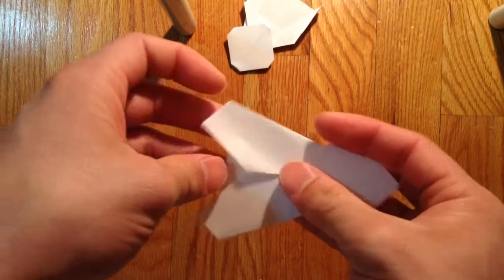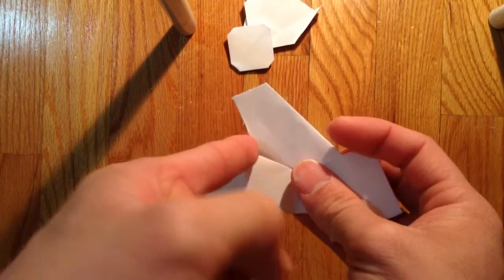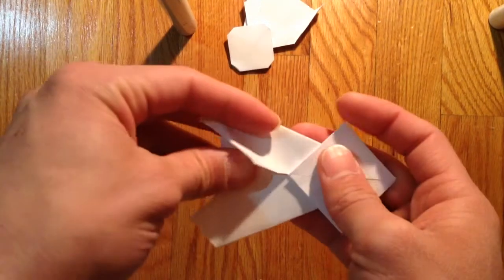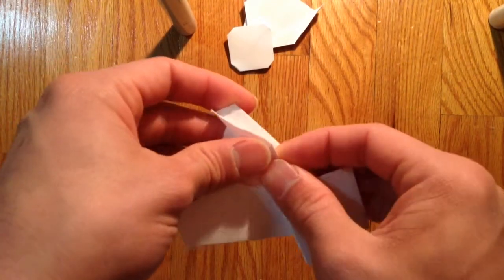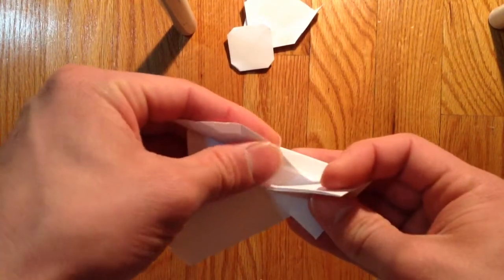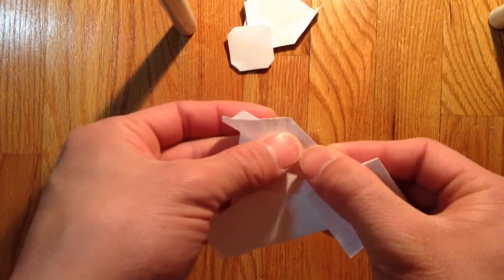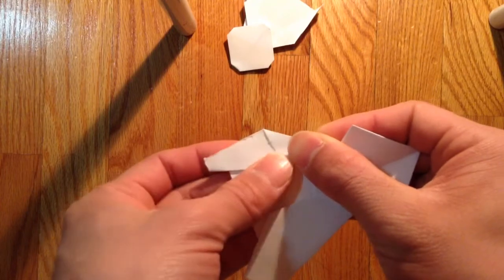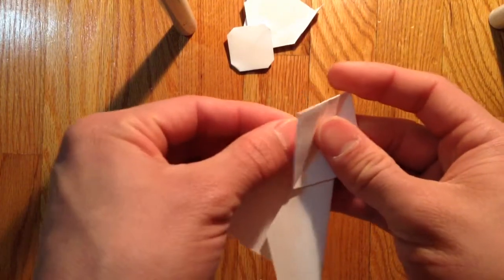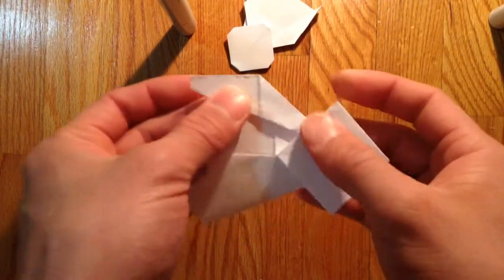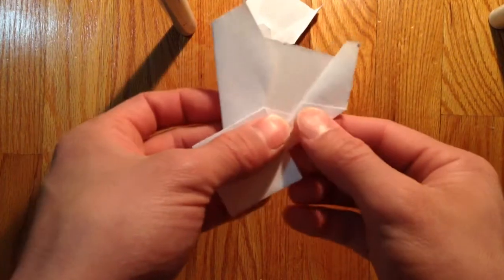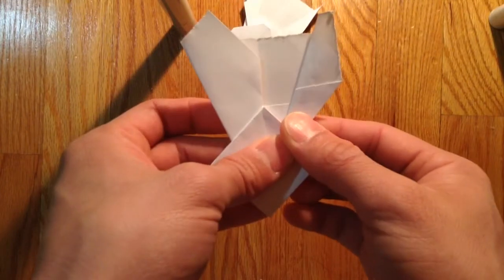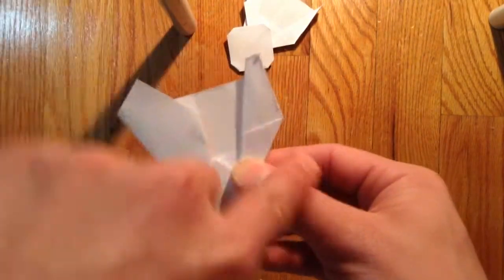Okay, then you bring this edge here on the back to that corner right there. And make sure it's parallel—just bring it all the way out, make sure it's parallel to the side of the plane. Like that, make sure it's straight.